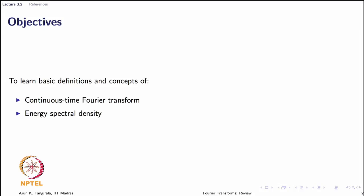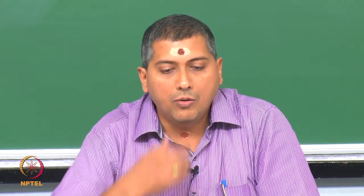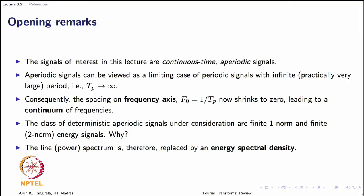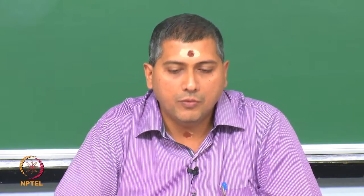In lecture 3.1, we reviewed the concept of continuous time Fourier series and the mathematical details, where we dealt with continuous time periodic signals. Now we move on to the class of continuous time aperiodic signals, which is where the Fourier transform arises. Aperiodic signals can be viewed as a limiting case of periodic signals with infinite period. Practically, this means we never see the repetition of the signal, and this viewpoint is used to derive the Fourier transform from Fourier series.